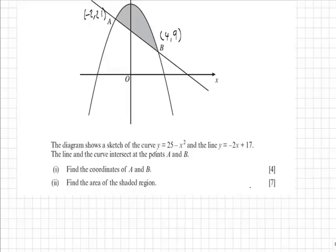In part 2 we have to find the area of the shaded region, which we can see would be the area under the curve between minus 2 and 4, take away the area under the line between minus 2 and 4.